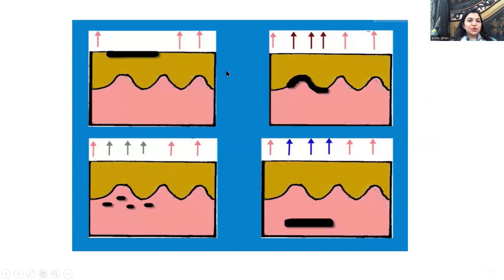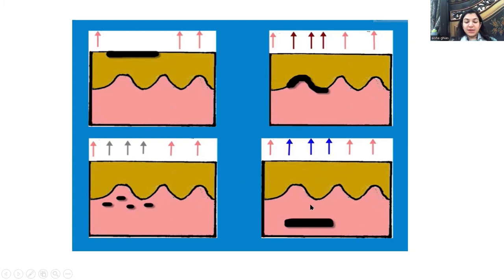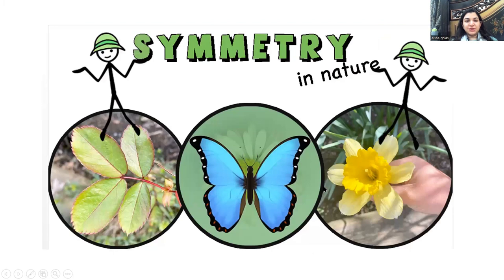All light falling on a superficial structure is blocked, so that area appears black. If structures scattering light are in the superficial dermis, some light scatters back and some is absorbed, making structures appear gray. When structures are deeper in the dermis, more scattering occurs — especially blue light, which scatters 16 times more — so they appear blue.